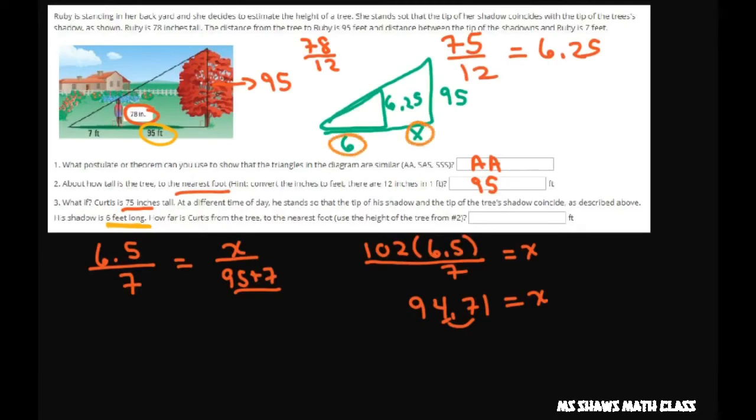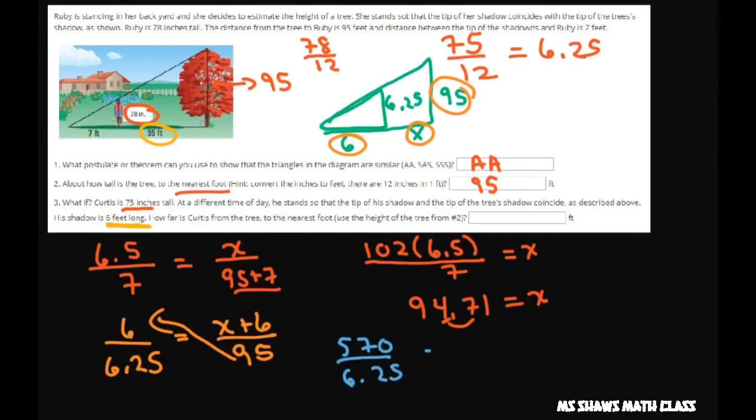Since we're solving for x, I'm going to start with this. So we're going to do 6 divided by 6.25 equals x plus 6 divided by 95, because that's your new height. Cross multiply and you get 95 times 6 is 570, so we have 570 divided by 6.25 equals x plus 6. Divide that by 6.25, get 91.2 equals x plus 6. Subtract 6 from both sides and you get 85.2 equals x.